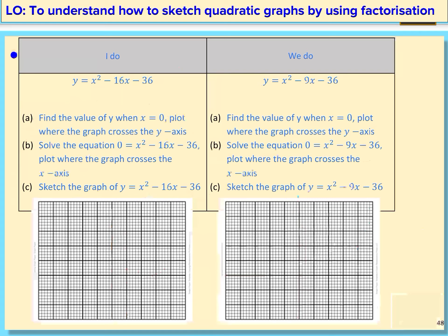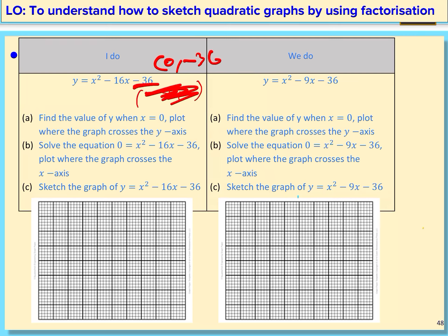We're going to do the same steps. We can tell already that the y-intercept is negative 36, and that coordinate is (0, negative 36). Then we're going to sketch our graph.